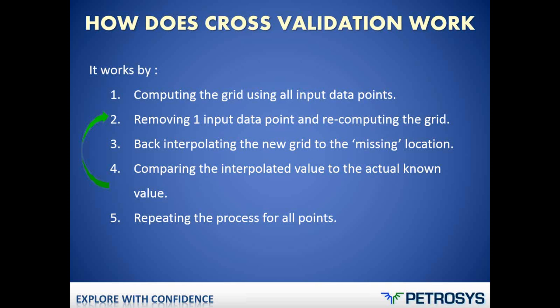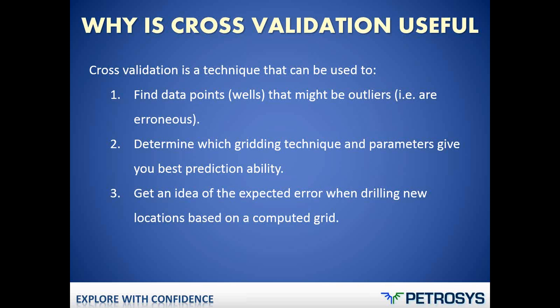This estimated value is then compared with the actual value of the grid at that point. And this process is repeated as many times as there are input points. So for example, if we have 40 input data points, it will run 40 times. Cross-validation is a very useful technique — it allows us to find outliers, such as erroneous well-picks, determine which gridding technique or parameters give the best prediction ability, and get an idea of expected error when drilling new locations based on the computed grid.